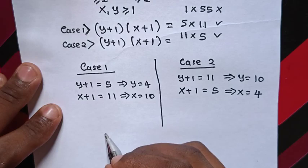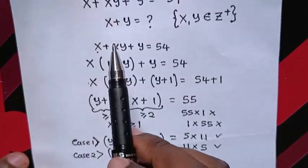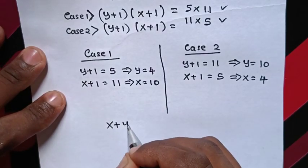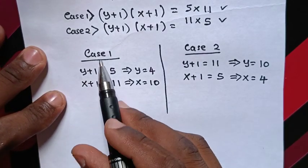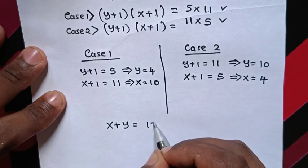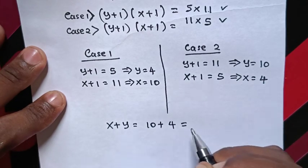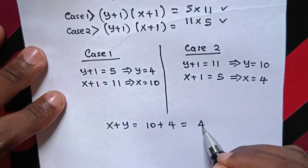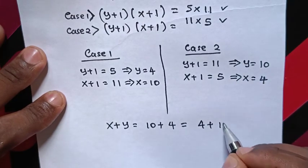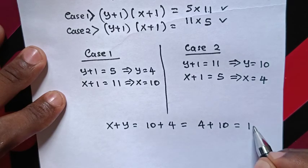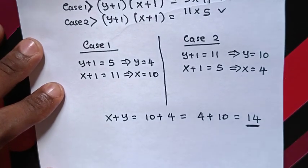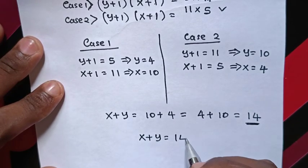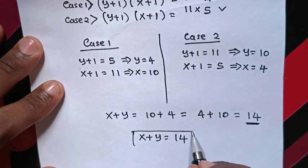Therefore, from our question, which asks to find the value of x plus y: in both cases x plus y equals 4 plus 10, which equals 14. Both cases give the same value. Therefore, x plus y equals 14. This is the final answer.